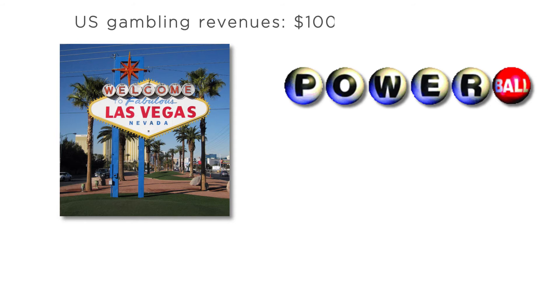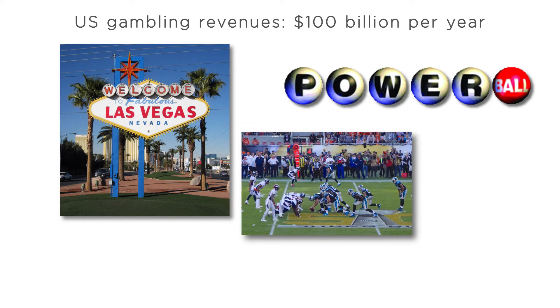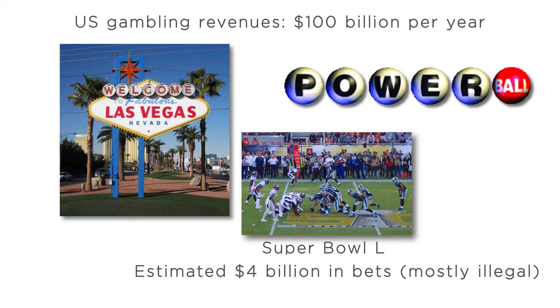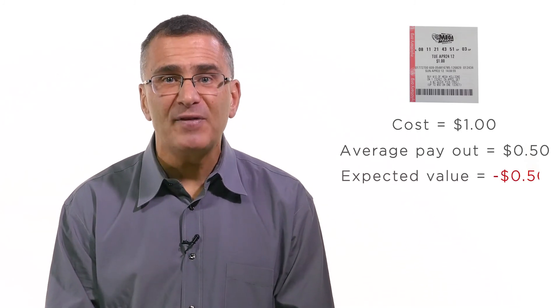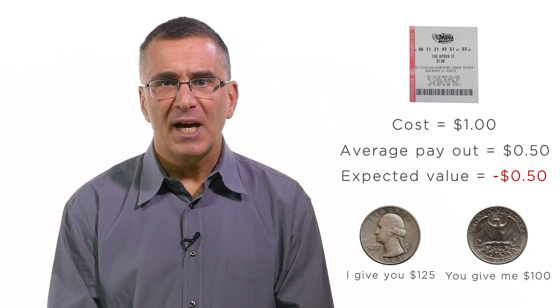By now you might be asking the question: if individuals are so risk-averse, why is it that actual gambling, say in Las Vegas or through state lotteries, is so popular in the U.S.? In the U.S., gambling generates revenues of nearly $100 billion a year, and that's just legal gambling that gets reported to the government. When the Denver Broncos faced off against the Carolina Panthers in Super Bowl 50, it's estimated that over $4 billion in bets, mostly illegal, were placed on that single game. Yet most gambling is a rip-off. Bets placed in casinos have an average payout of less than $1 for each dollar bet — they're less than fair. It's even worse with the lottery. On average, a $1 lottery ticket will pay out only 50 cents. The expected value of buying a lottery ticket is negative 50 cents. This is even worse than our coin flip bet from earlier; at least in that bet, the expected value was positive for you. So why do so many people play the lottery? We offer some theories in the application video.